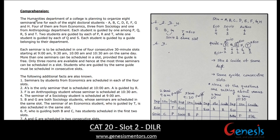Let us see this caselet. The humanities department of a college is planning to organize eight seminars, one for each of the eight doctoral students. There are eight students: four of them are from economics, three from sociology, and one from anthropology department.